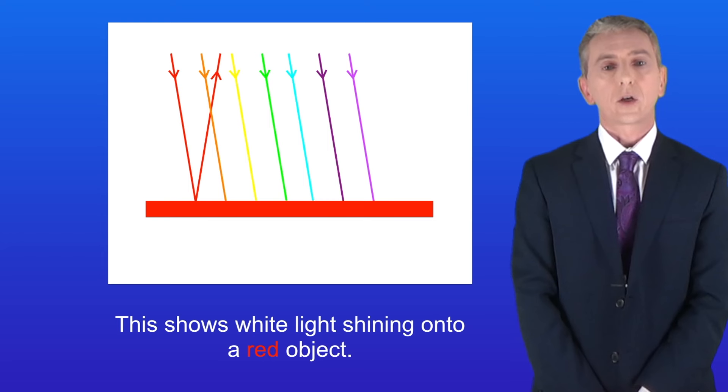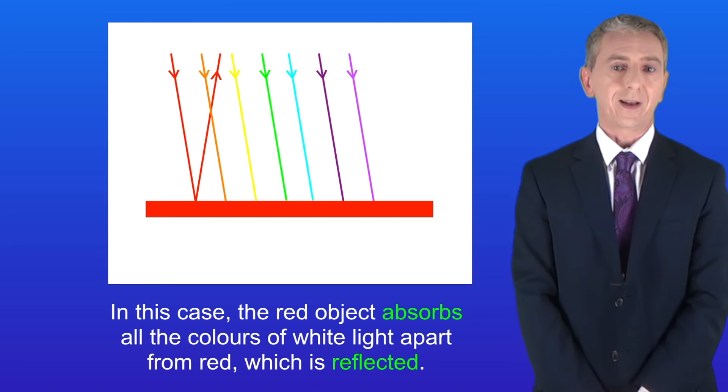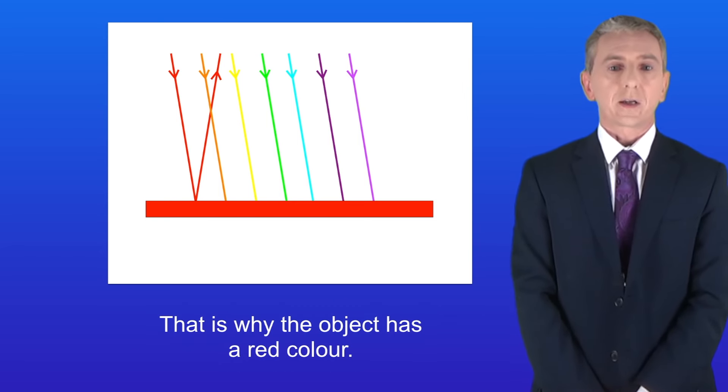This shows white light shining onto a red object. In this case, the red object absorbs all the colors of white light apart from red, which is reflected. And that's why the object has a red color.